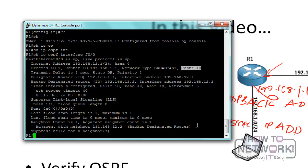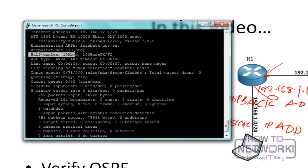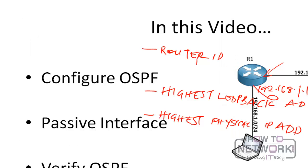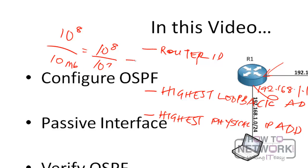The network type is broadcast. OSPF network types are not part of the ICND1 syllabus. We can also see that the cost is 10. OSPF calculates the cost using the formula: 10^8 divided by the bandwidth. Checking 'show interface FastEthernet 0/0', the interface is running at 10 Mbps. So the cost = 10^8 / 10^7 = 10. If you have a 100 Mbps link, the cost would be 10^8 / 10^8 = 1. This formula was set when fast Ethernet was considered very fast.